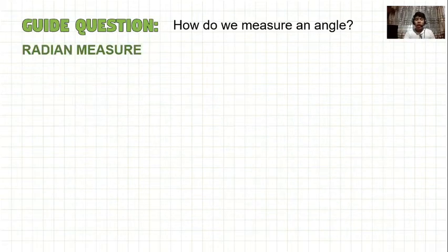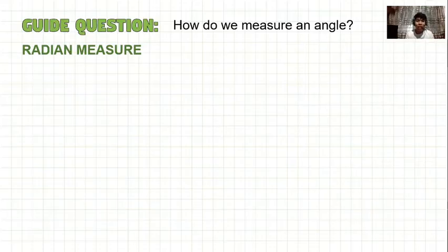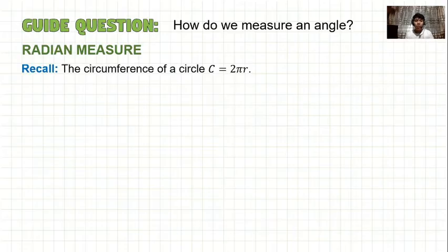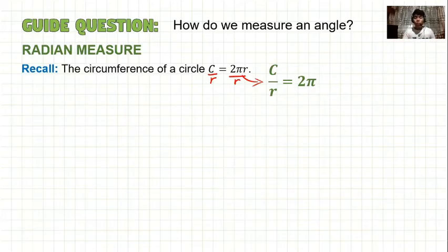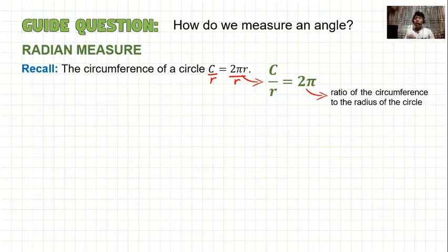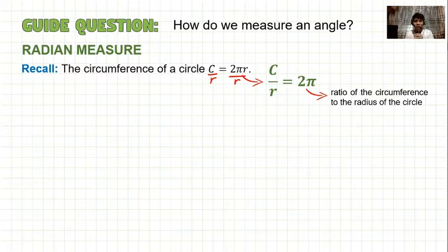Now for radian measure — let us first recall the circumference of a circle. The circumference, which is the total arc length, is given by the formula 2πr. If we divide both sides by r, we get C over r equals 2π. This means 2π is just the ratio of the circumference to the radius of the circle. So if you divide the circumference by the radius, the answer is 2π, which is approximately 6.28.